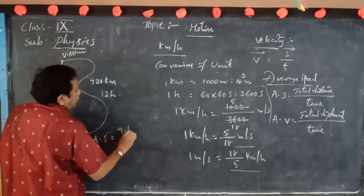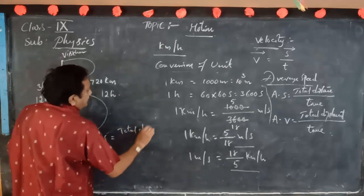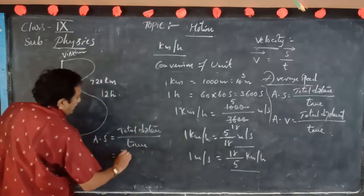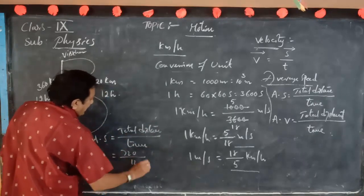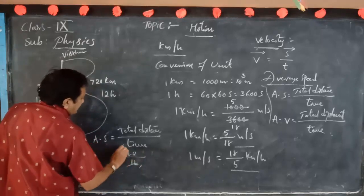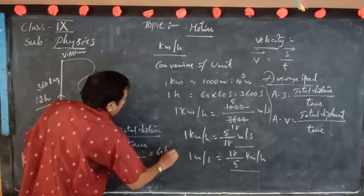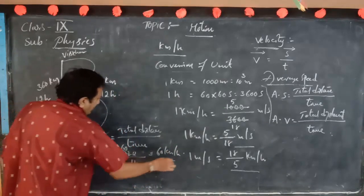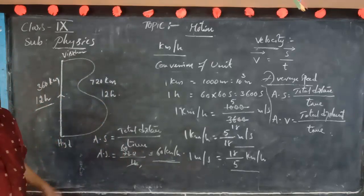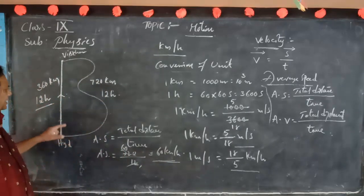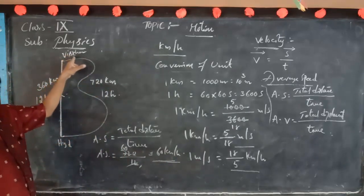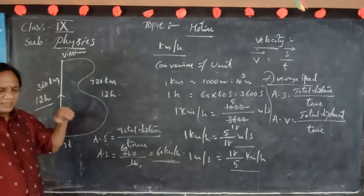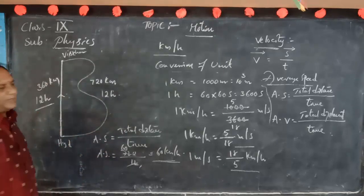Average speed equals total distance by time taken, that is 720 by 12, which equals 60 km per hour. So the vehicle's average speed is 60 km per hour — it travels 60 km per hour and reaches Visakhapatnam in 12 hours.